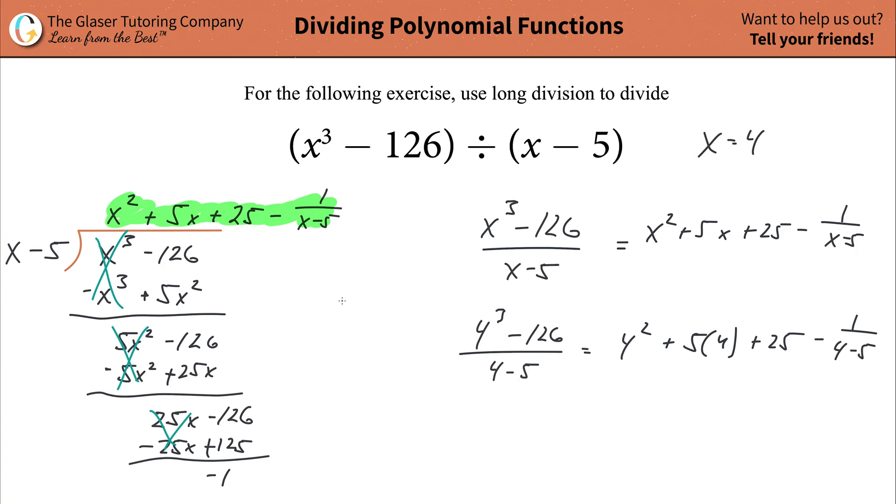So four cubed is going to be 64, that's going to be minus then the 126, whoops, almost made a mistake there, and when you do this math on out, it comes out to be 62. So this numerator here should be 62. So it's going to be 62 over now that works out to be a negative one, and that's going to be equal to now 16 plus then 20 plus then 25, this looks like minus one over negative one, so it's a double negative there. So it's just going to be plus one. So let's see what this comes out to be.